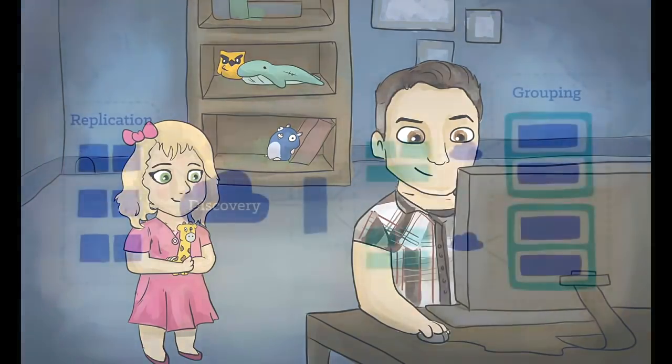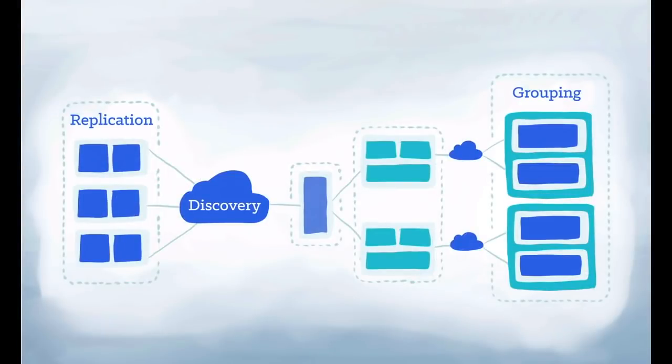And I responded, Kubernetes is an open source orchestration system for Docker containers. It handles scheduling onto nodes in a compute cluster and actively manages workloads to ensure that their state matches the user's declared intentions. Using the concepts of labels and pods, it groups the containers which make up an application into logical units for easy management and discovery.